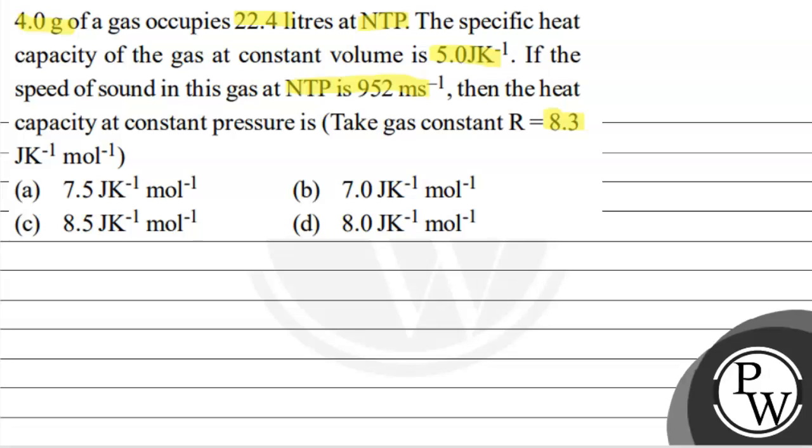So it will be 1 mole, so its molar mass is given, which is equal to 4 grams, which we change to kg: 4 into 10 to the power minus 3 kg. The specific heat given at Cv is equal to at constant volume 5 Joules per Kelvin.